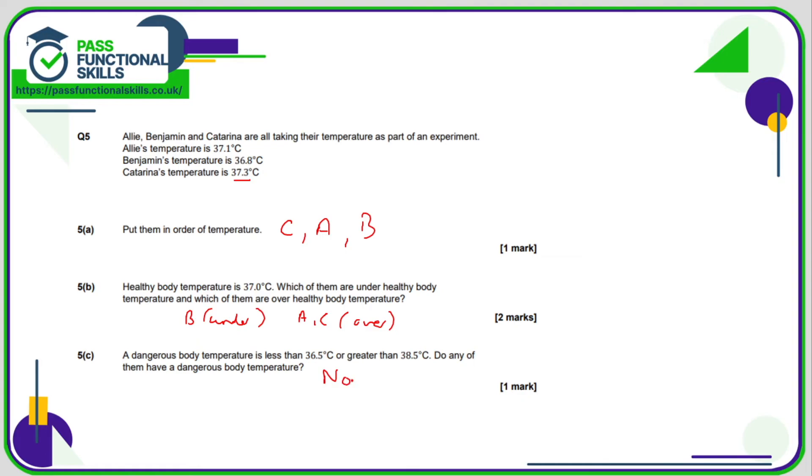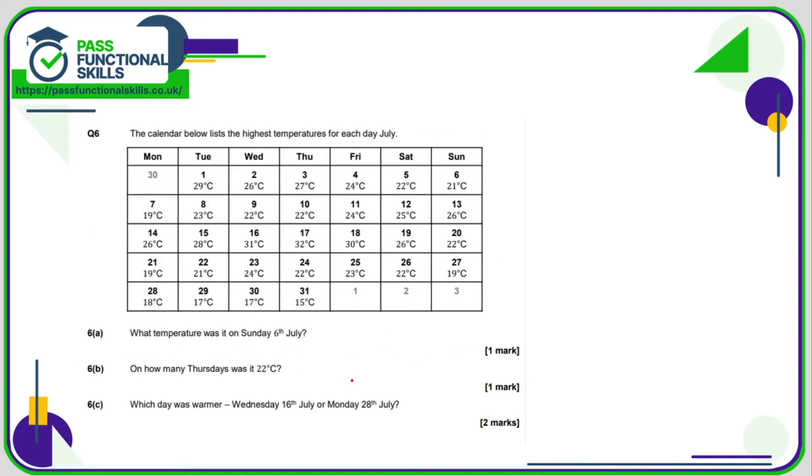The final question, question six: what temperature was it on Sunday the 6th of July? Here's Sunday is the 6th: 21 degrees. How many Thursdays was it 26 degrees? Here is the Thursday's column, so it was 22 degrees on the 10th and on the 24th, so that's two Thursdays. Which day was warmer, Wednesday the 16th or Monday the 28th? We're just comparing these two here. Well, 31 is a lot warmer than 18, so the answer is therefore Wednesday the 16th of July.